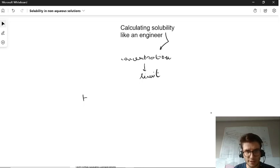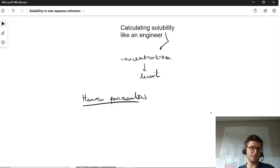The solubility calculated like an engineer is actually done via the Hansen parameters. It actually explains the solubility based on three different levels.